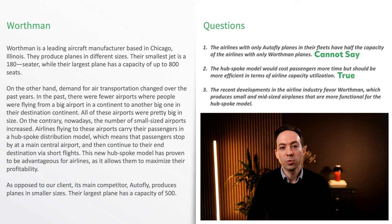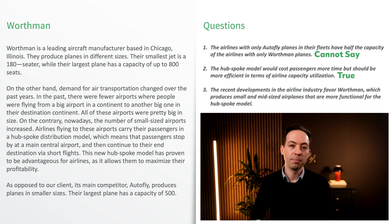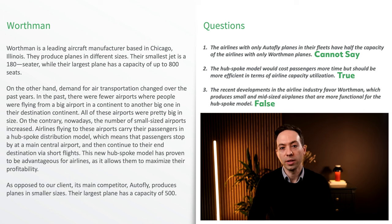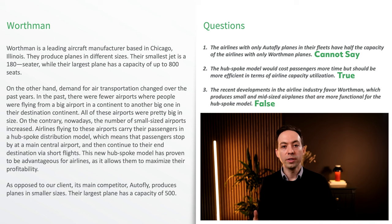The last question: the recent developments in the airline industry favor Werthmann, which produces small and mid-sized airplanes that are more functional for the hub-spoke model. The answer is false. The hub-spoke model favors Werthmann's competitor, Autofly, because Werthmann offers extra large planes to serve long distances, while Autofly's planes are more convenient for short and mid-range flights.